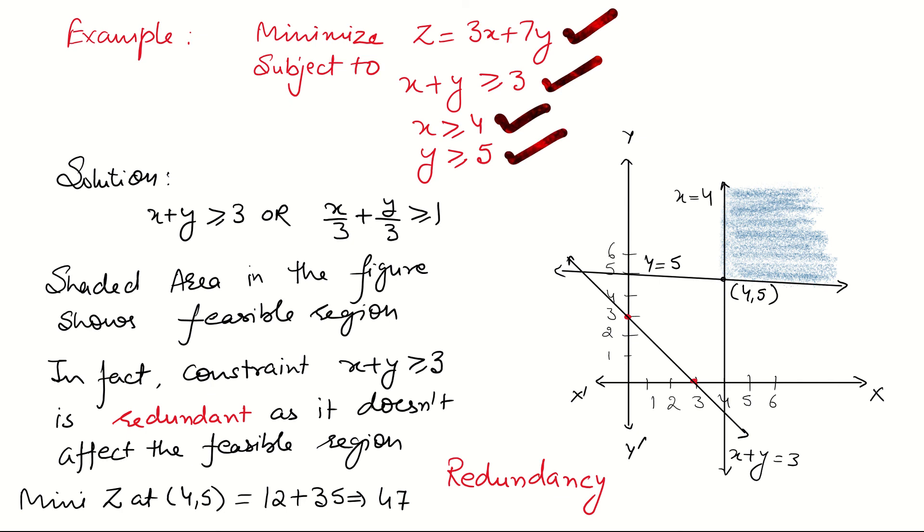After drawing all the inequalities on the graph, we get the common area. This is your feasible region. And the corner point is (4,5). If you see this figure very carefully, the constraint x plus y equal to 3, its shade is away from the origin. This constraint doesn't make any impact on the feasible region. That's why this constraint is redundant. And it's a case of redundancy.